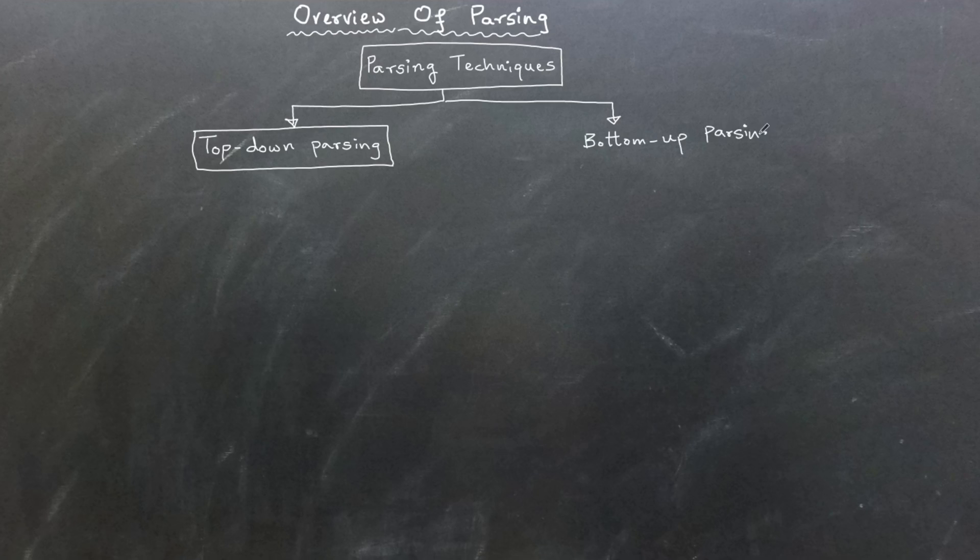In top-down parsing, we start from the start symbol of the context-free grammar and derive towards the input. In contrast, bottom-up parsing starts with the input and reduces it back to the grammar start symbol.